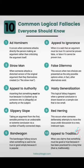Number six: appeal to ignorance — when it is said that an argument must be true if it cannot be proven false, or false if it cannot be proven true. Number seven is a false dilemma — this occurs when two choices are presented as the only options when in fact other alternatives exist.